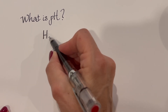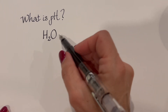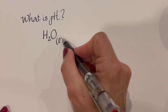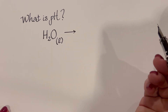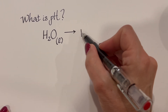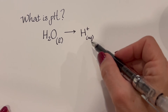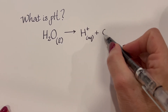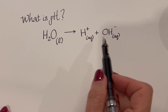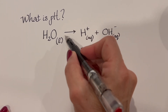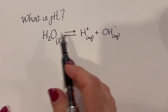Water is ubiquitous — it's everywhere on planet Earth. And it has a special behavior. Any time you have water, it has the ability to break apart into H-plus ions that are then surrounded by water molecules — so it's aqueous — and hydroxide ions. Now these two ions can then back-react and go in the opposite direction, so this process is in equilibrium.